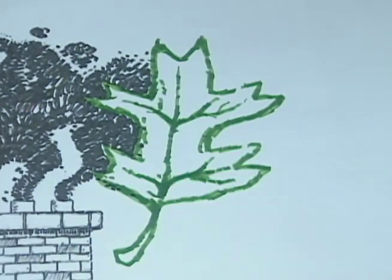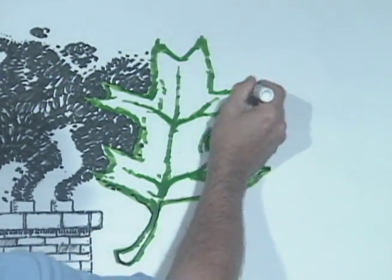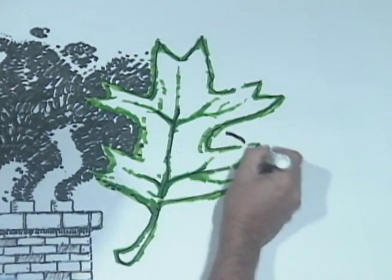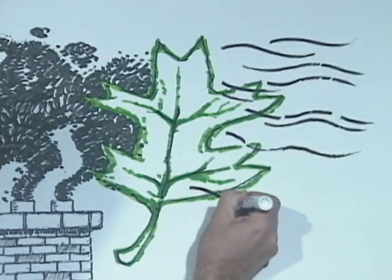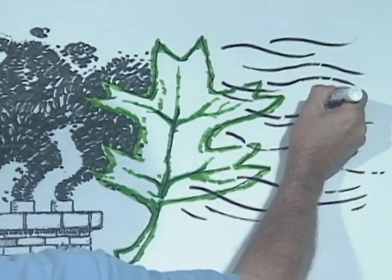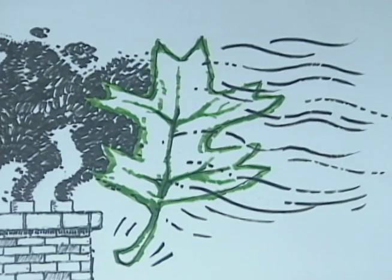Trees help with these sorts of pollution in two ways. First, particles suspended in the air. Everything from dust to metals gets stuck to tree surfaces. The leaves, branches, and trunks actually strain the air, making it more breathable.